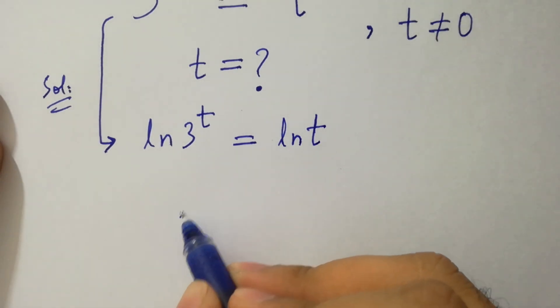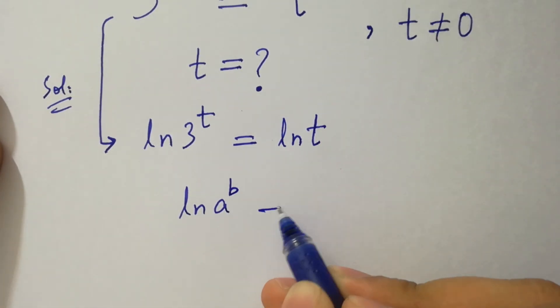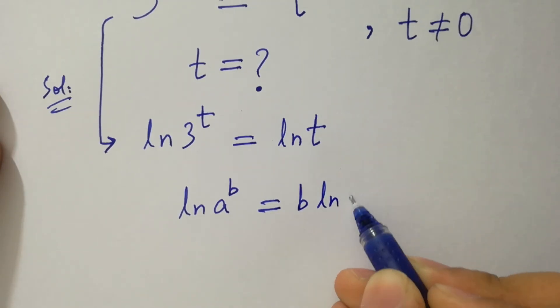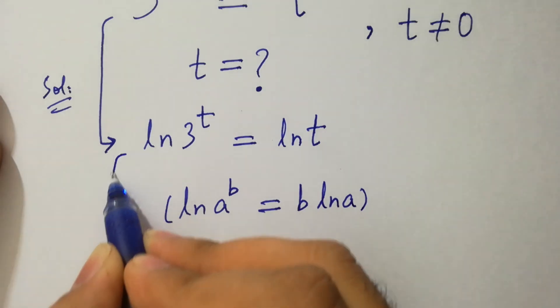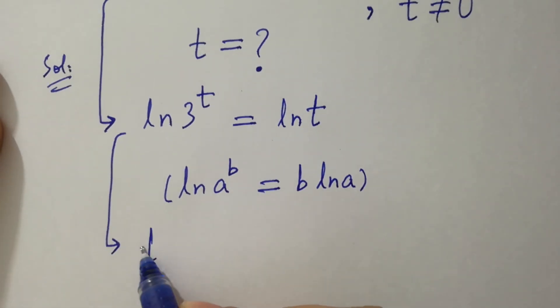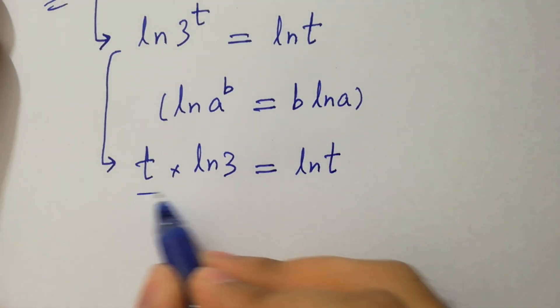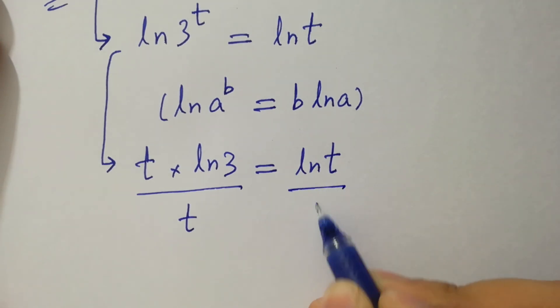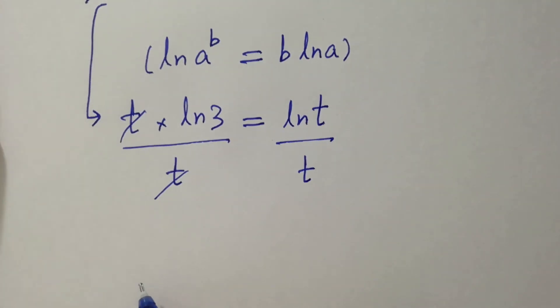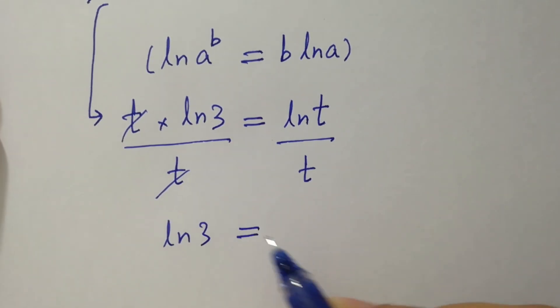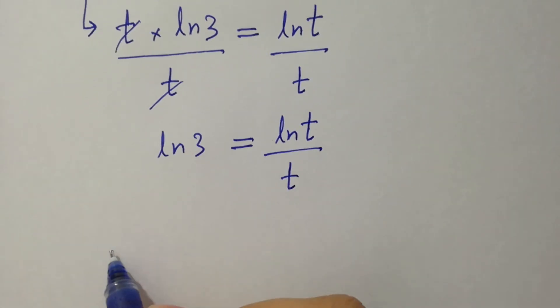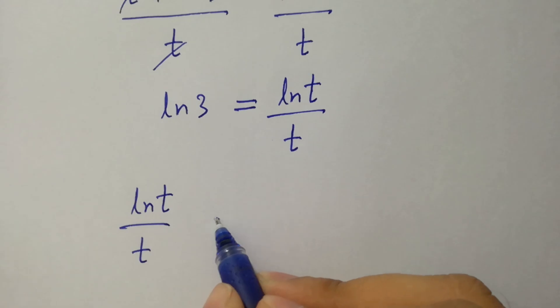As we know ln a to the power b equal to b ln a. Then it will be t times ln 3 equal to ln t divided by t on both sides where t cancels. We get ln 3 equal to ln t over t which is same as ln t over t equal to ln 3.